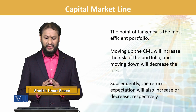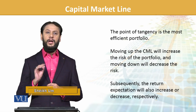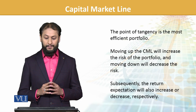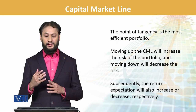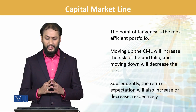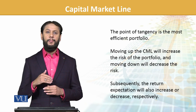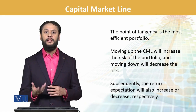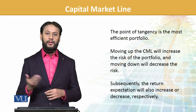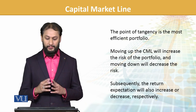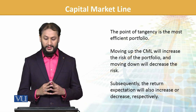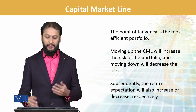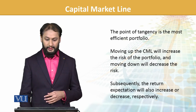The point of tangency is the most efficient portfolio — it is the highest level, the best possible. Moving up the CML will increase the risk, and moving down will decrease the risk. Investors can move along that line based on their appetite and willingness. That's the best possible available, and returns will increase or decrease based on the expectation and the movement.